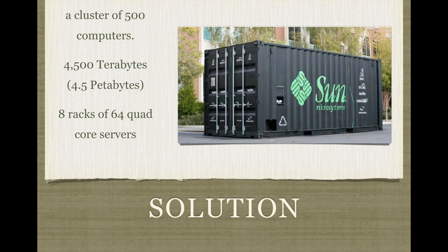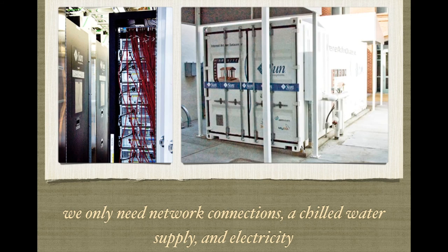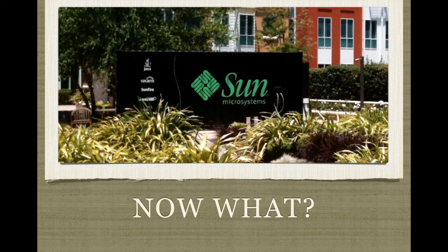Let's say we have one of these Sun cluster boxes — inside is a cluster of 500 computers, 4,500 terabytes or 4.5 petabytes, eight racks of 64 quad-core servers. A lot of stuff packed in, and we can move it anywhere. We can store the whole web on it. Here's the Internet Archive's box — you only need network connections, a chilled water supply because it gets pretty warm, and electricity. So that's all we need; we can move these boxes anywhere.